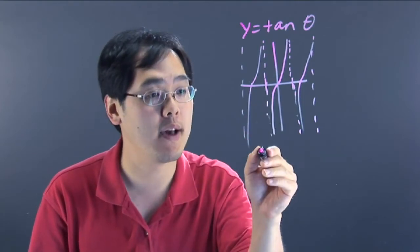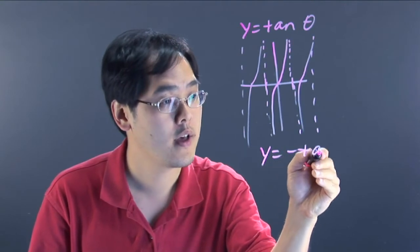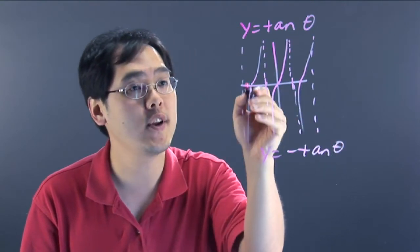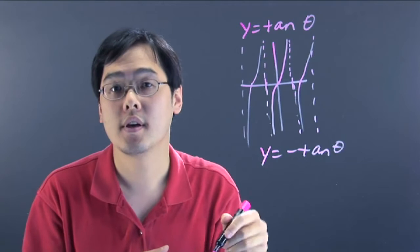So basically, if you have a negative tangent graph, think of every tail being flipped in the opposite direction.